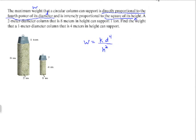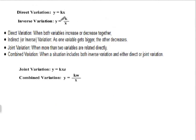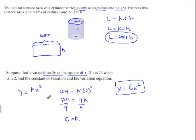Backtracking just a little bit: with direct variation, we could solve using a proportion, and with inverse variation, we could solve using a product, where x₁·y₁ = x₂·y₂. We had those approaches for direct and inverse variations. But when you get to joint and combined variations, it's just too complex to try to use proportions and products. It's easiest to just take the formula for joint or combined variation and go with it.